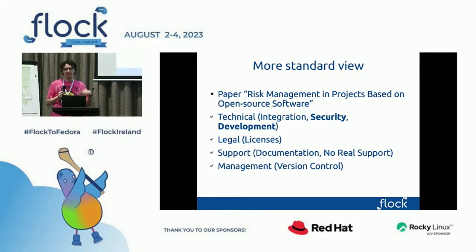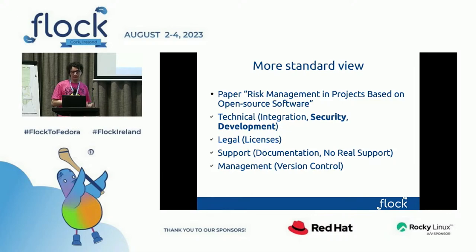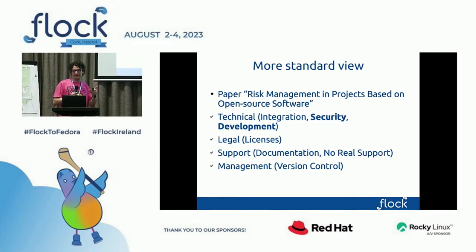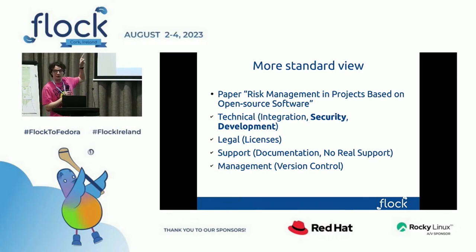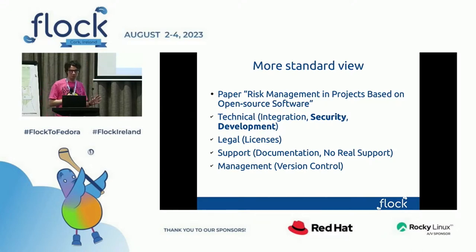The paper talks about risk types: integration risk, security and development risk, legal — which is mostly about licenses — support, if there is documentation and real support, and management, including version control. When I think about version control, we have to think not like git itself but more like the tags in git — the releases. This is actually funny because if you go to SCA on Wikipedia, they use this paper as a reference and split the technical into development integration, putting security separate, which is also quite popular.